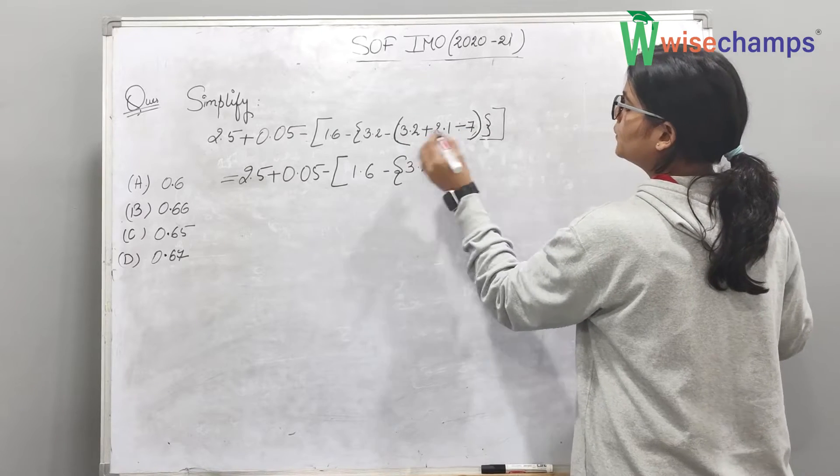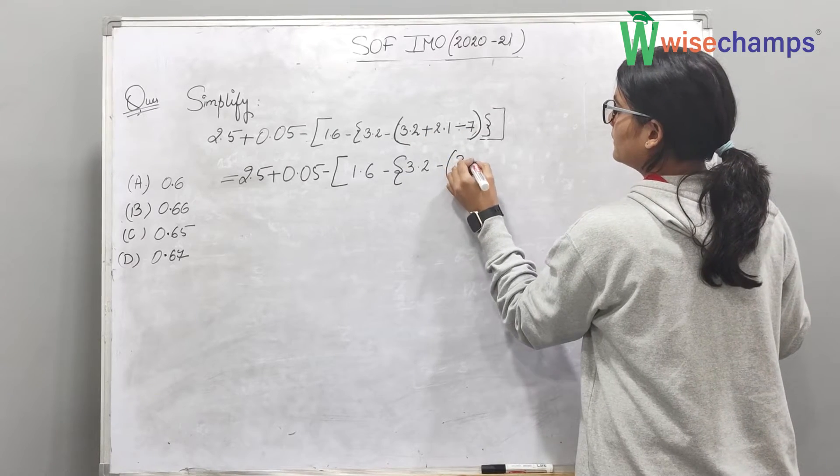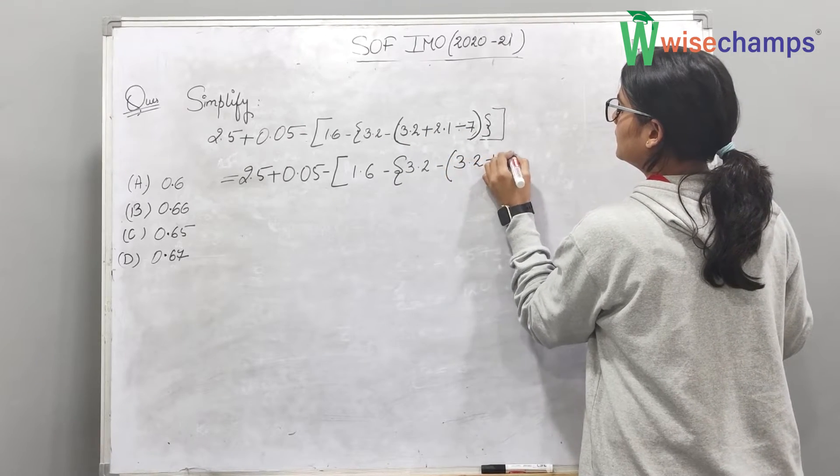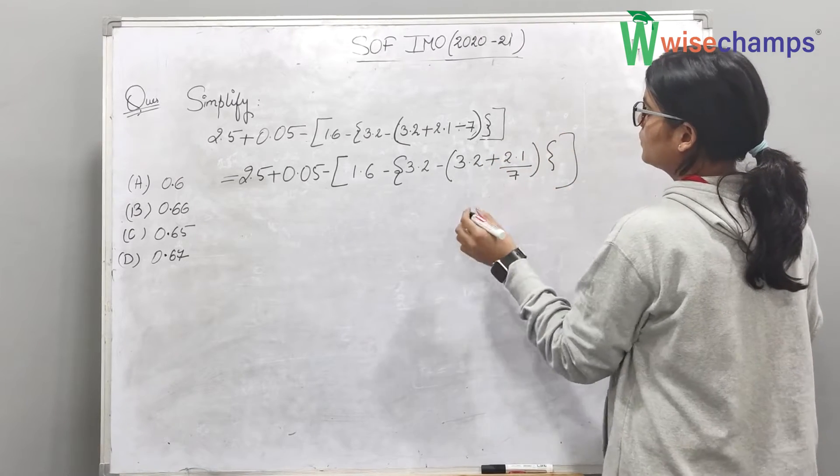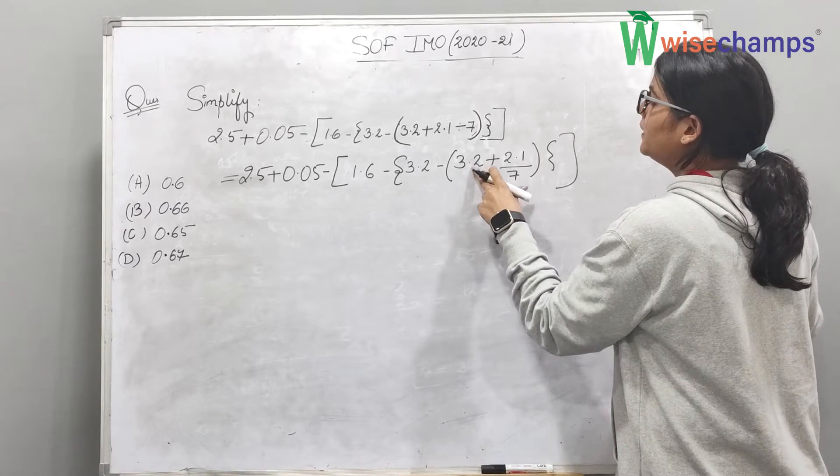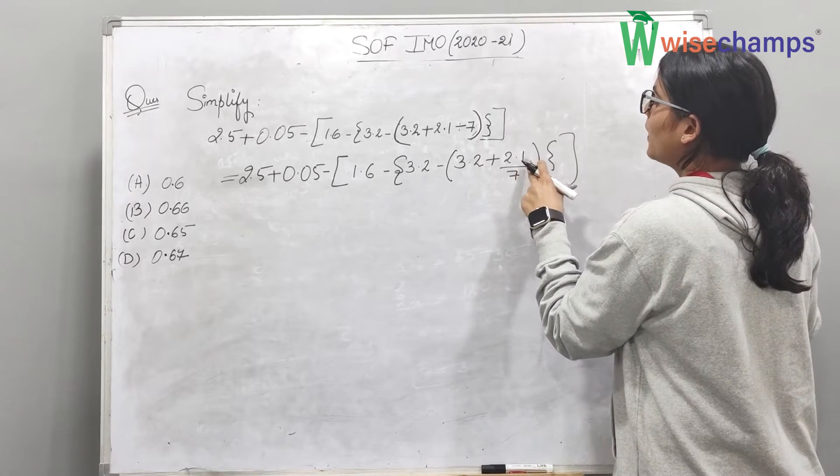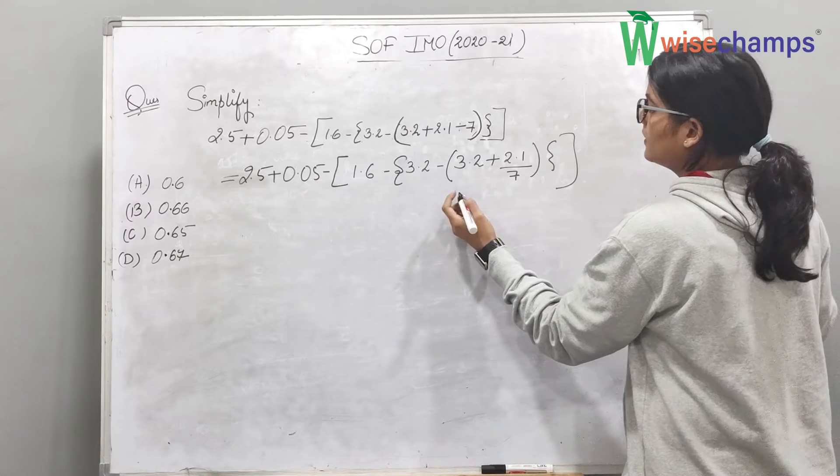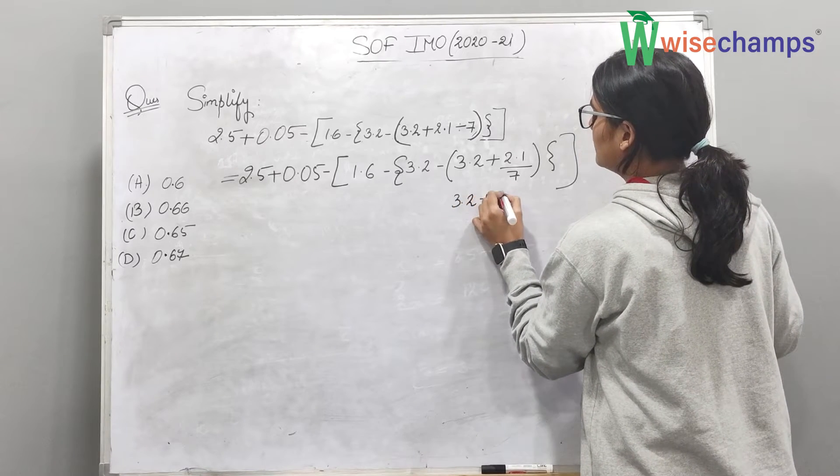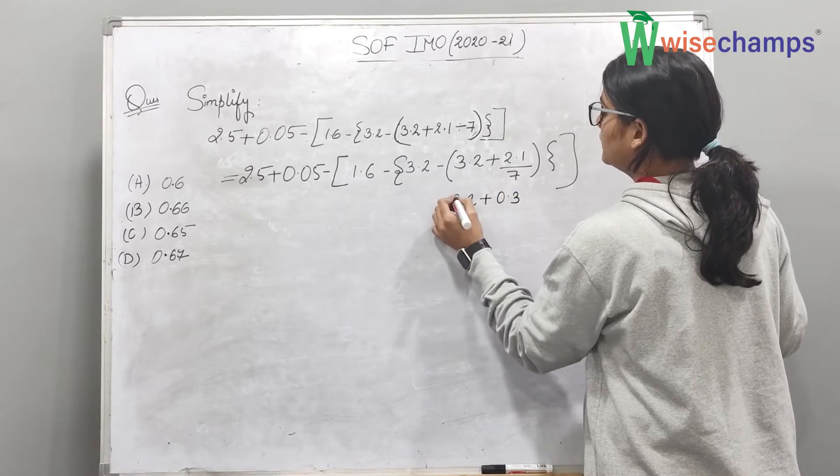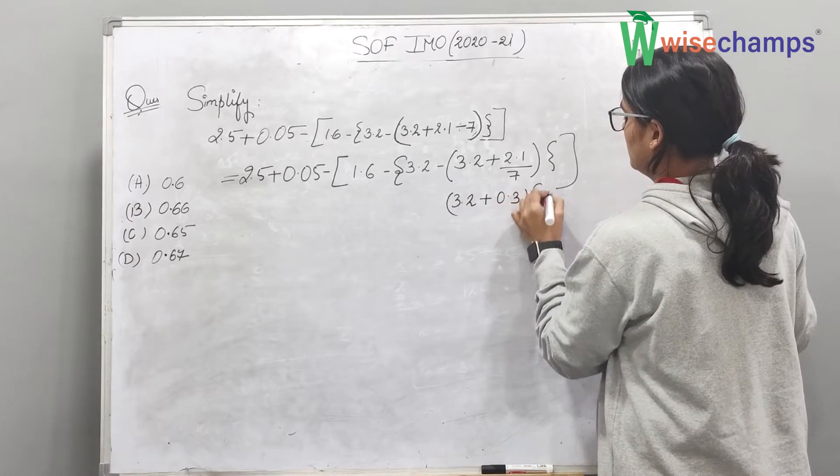Now come to this bracket. So, 3.2 plus 2.1 divided by 7. What will be the answer? 0.3 will be the answer.